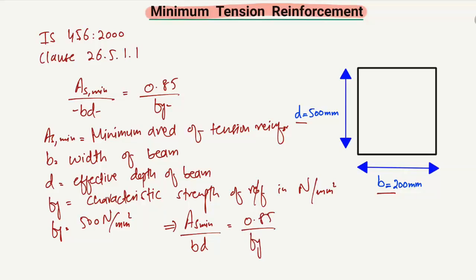We shift BD to the right side and solve the equation. We get As_min = (0.85 × B × D) / fy. Putting in the values: 0.85 is a constant, B is 200 mm, D (effective depth) is 500 mm.